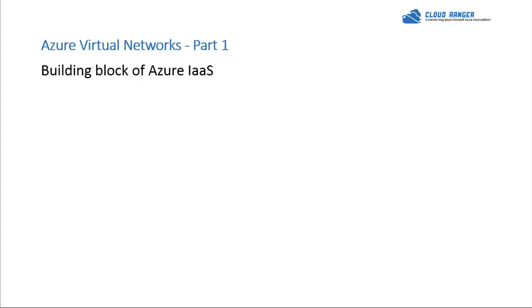The first thing we will talk about is the building blocks of Azure Infrastructure as a Service. The three building blocks are compute, networking, and storage. We have talked briefly about compute, and today we are going to deep dive into real exam requirements about networking. This session assumes certain prerequisites — I'm not going to cover what a network is or how virtualization works. I'll assume you already know a little bit about all this.